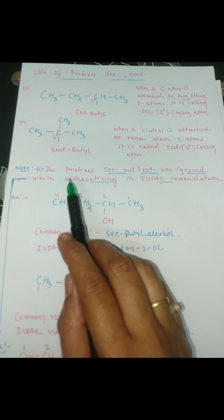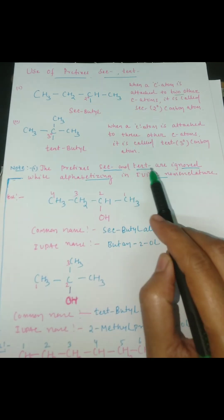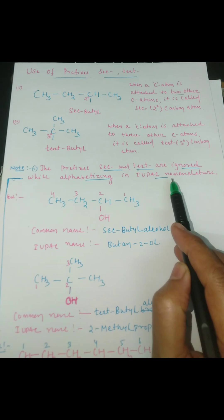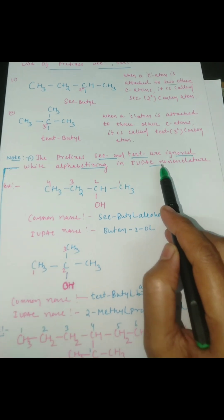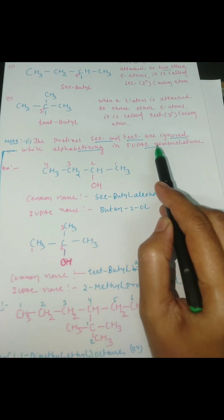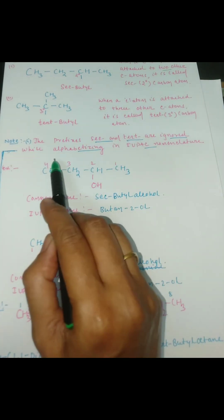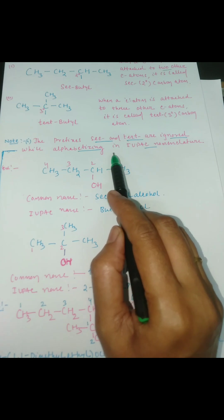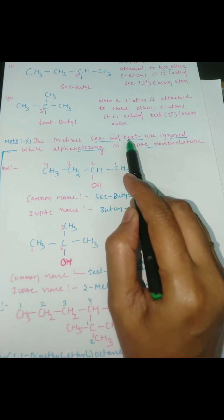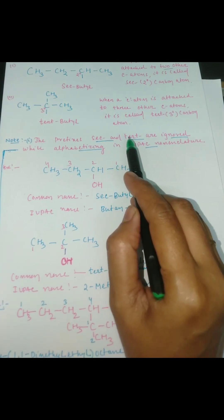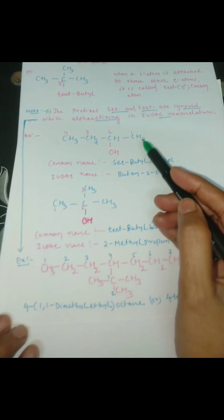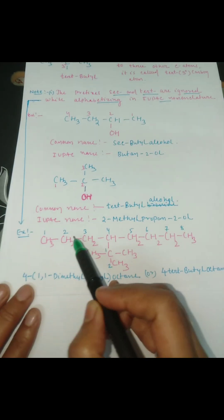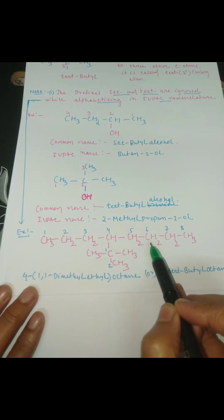An important point here is that the prefixes secondary and tertiary are ignored while alphabetizing in IUPAC nomenclature. When we arrange substituents according to alphabetical order, secondary and tertiary cannot be counted — they are ignored. Let us see one example based on this note.